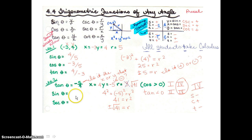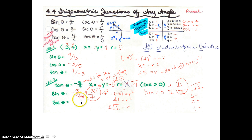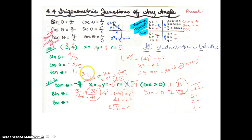To find sine, by definition sine is y over r. So y is negative 5 and r is the square root of 41, giving us negative 5 over the square root of 41. We rationalize by multiplying top and bottom by the square root of 41 to get the radical out of the denominator. To find secant, secant equals r over x, so the square root of 41 over 4.